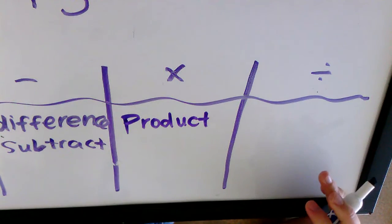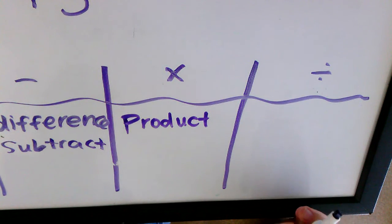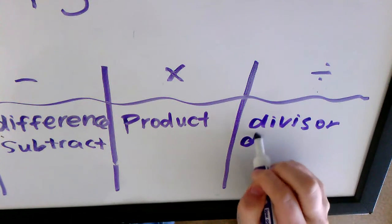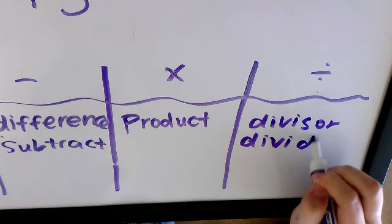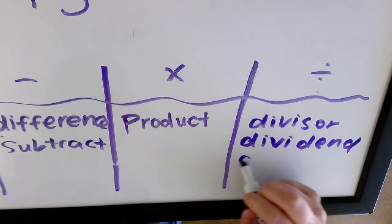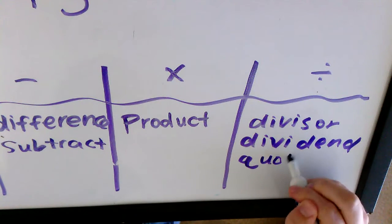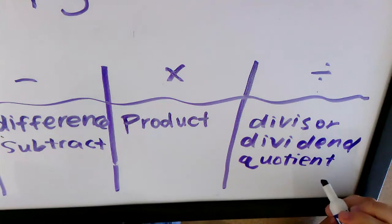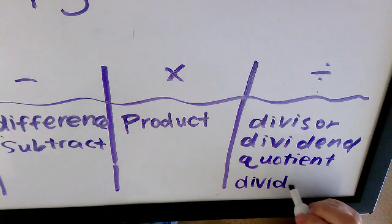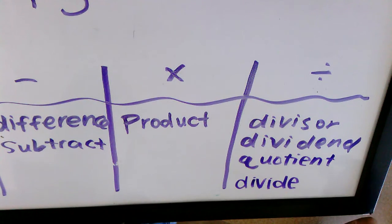You might see the words divisor and dividend. The answer for a division problem is called a quotient. If I recall correctly, you might just see the word divide in the Go Formative, which makes that pretty simple.